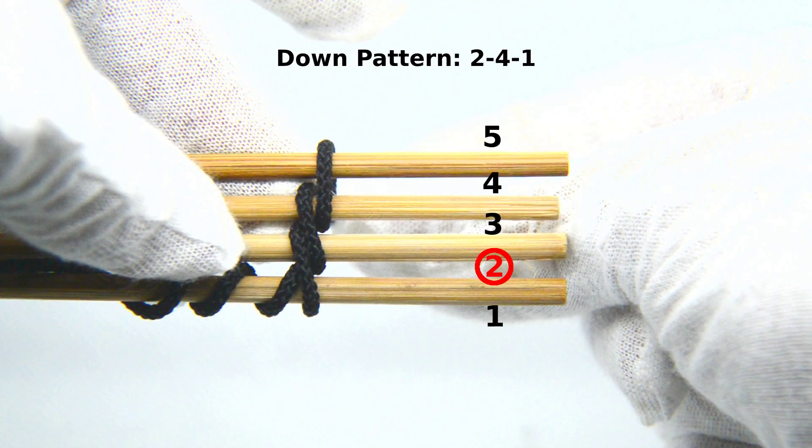In the second segment of the weave, you will go down the base wires following a 2-4-1 pattern.